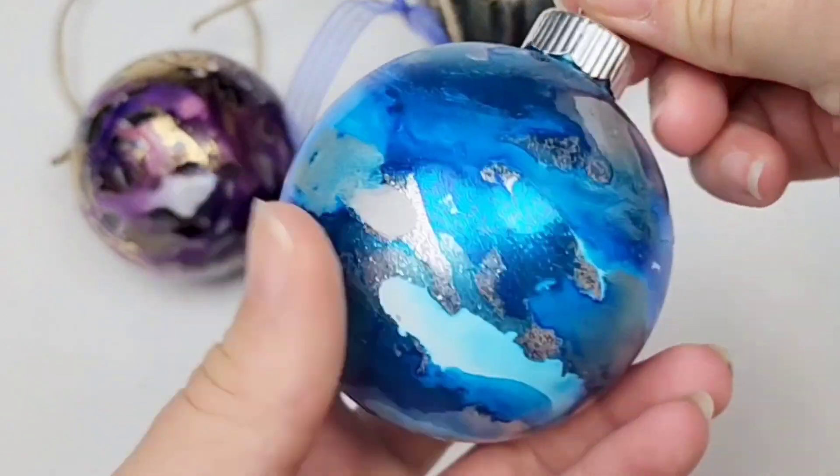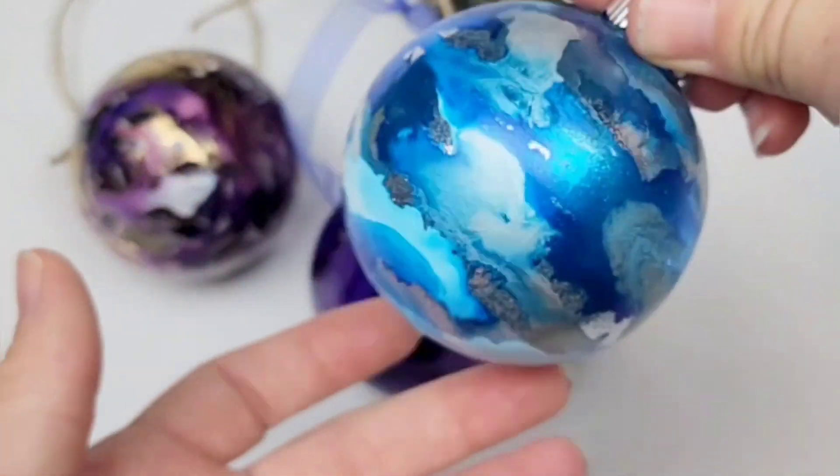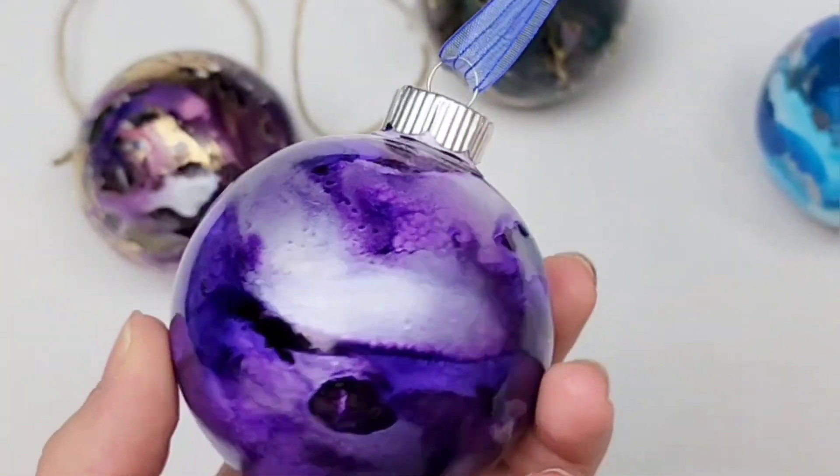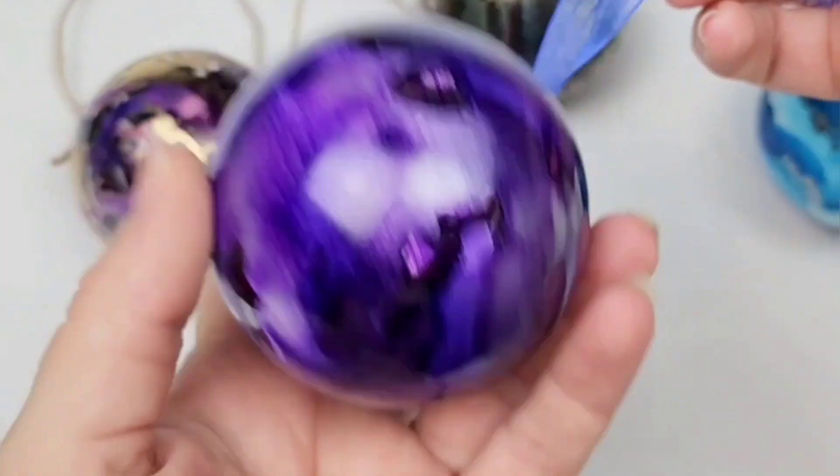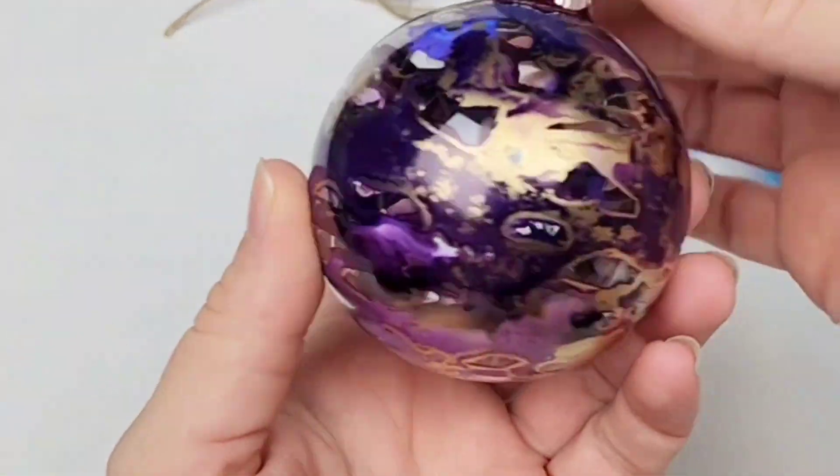This one, I actually put glitter in the inside as well. If you want to seal it, use something like a Krylon Kamar spray, which can hold on to that ink and not make it run.